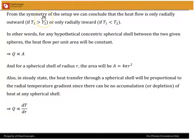From the symmetry of the setup, we can conclude that the heat flow is only radially, and it will be radially outward if T1 is greater than T2, radially inward if T1 is less than T2. It will be radial because there can't be any tangential component, because there is symmetry.